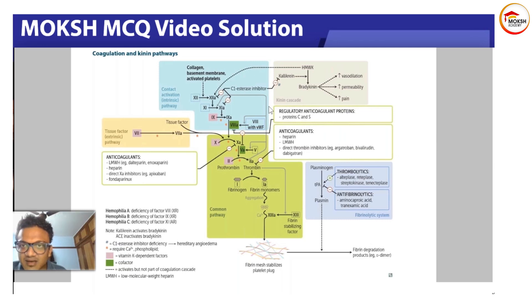So kallikrein breaks down - factor 12 inhibits C1 esterase inhibitor. C1 esterase inhibitor usually inhibits kallikrein, but factor 12 inhibits this C1 esterase inhibitor which will lead to activation of kallikrein. Getting it? This is a tricky one I know.